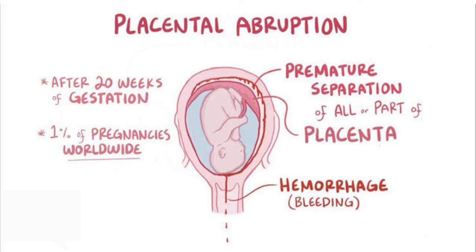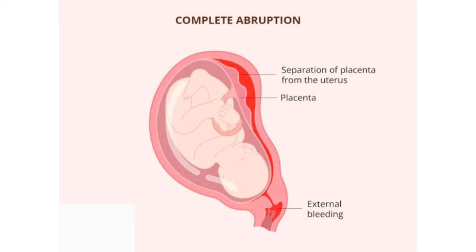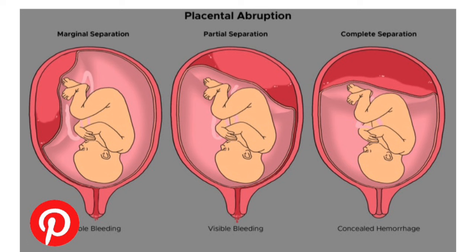What happens is that bleeding occurs at the decidual-placental interface — where the placenta attaches to the decidua of the endometrial lining. This bleeding grows and leads to a hematoma, which causes separation of the placenta from the uterine wall. The hematoma becomes so large that it compresses the placental structures, affecting blood and nutrient supply to the fetus, leading to fetal distress and other complications.